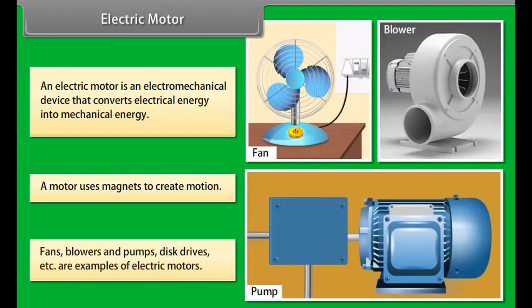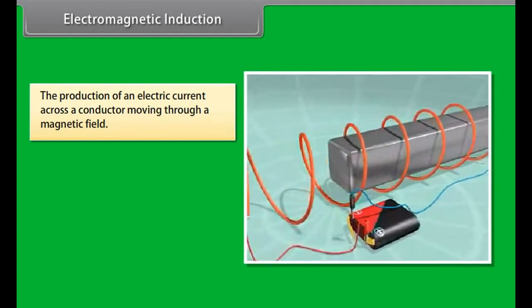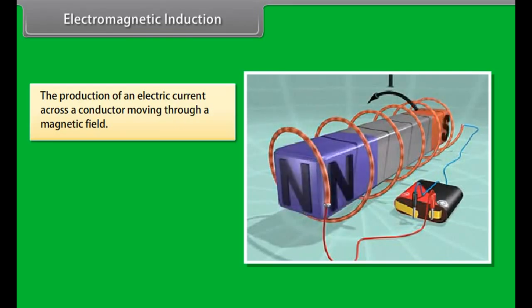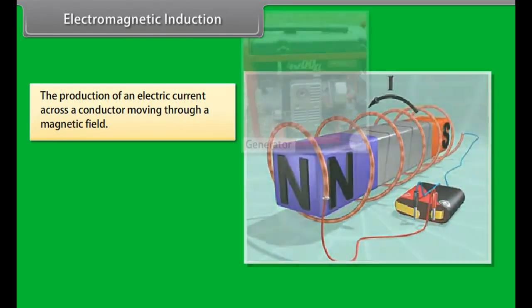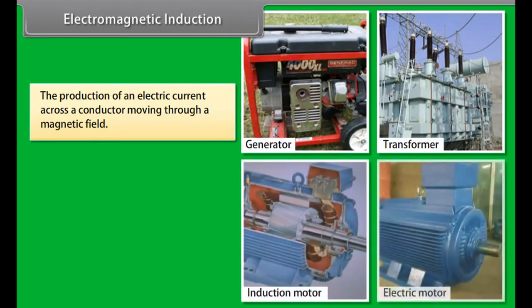Electric Motor. An electric motor is an electromagnetic device. It converts electrical energy into mechanical energy. Let us look at how electric motors work. A motor uses magnets to create motion. Inside an electric motor, the attracting and repelling forces of a magnet create rotational motion. Fans, blowers and pumps, disc drives, etc. are some examples of electric motors.